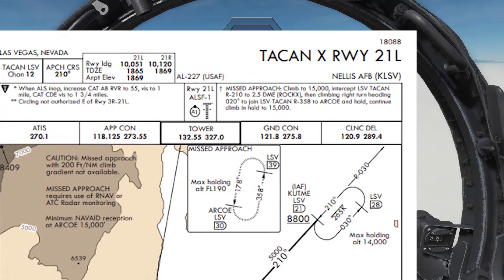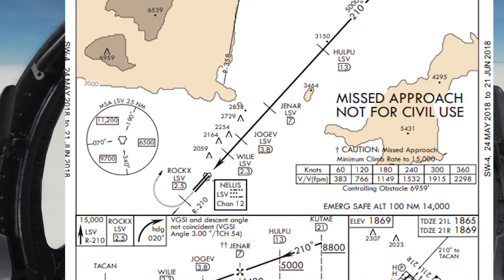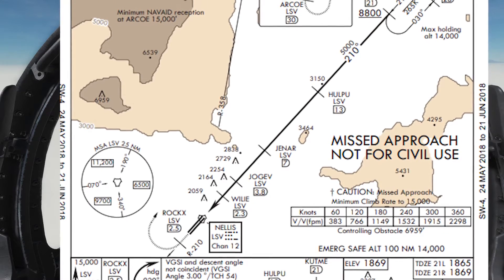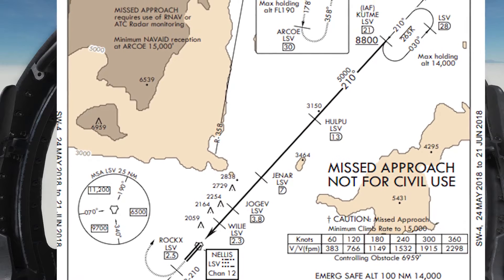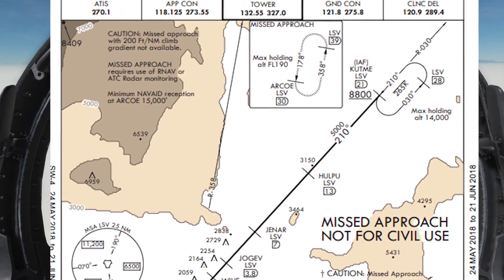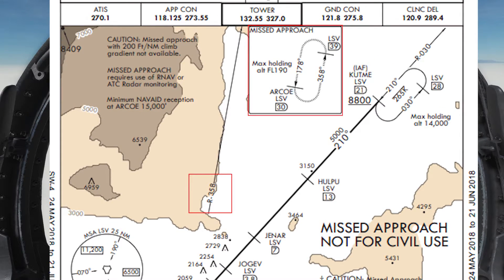If we go back up to the very top right we can see the missed approach instructions: climb to 15,000, intercept the Nellis TACAN radial 210 to 2.5 DME, then climbing right turn heading 020 to join the TACAN 358 until the waypoint ARCO. We'll hold there and continue to climb to 15,000 and wait for ATC.